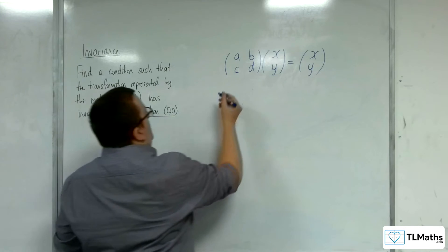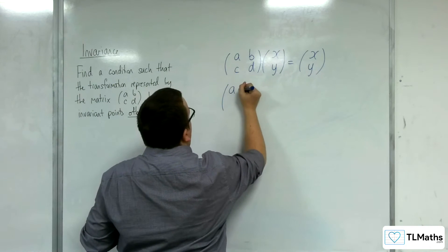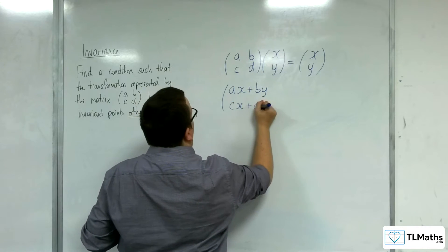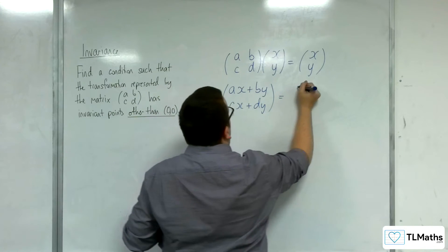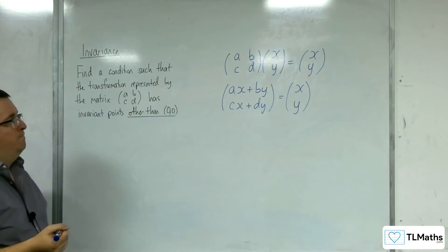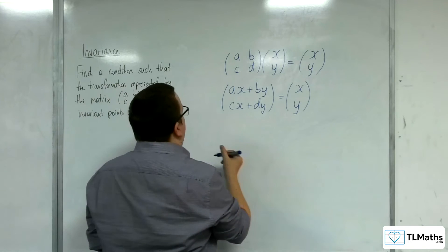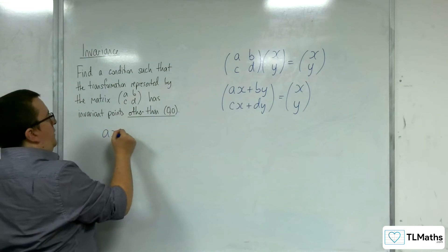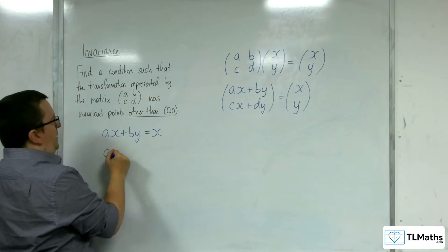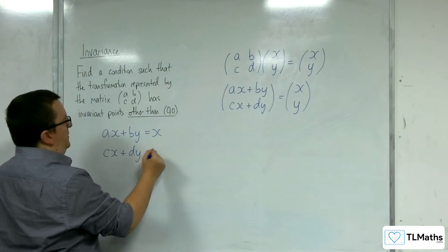So what that means is that we would have ax + by and cx + dy equal to (x; y). I would need ax + by to be equal to x and cx + dy to be equal to y.